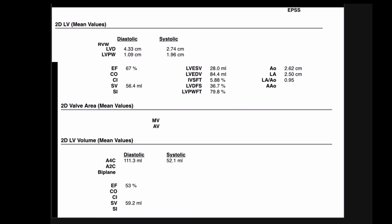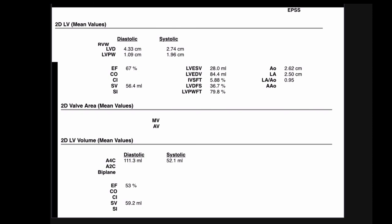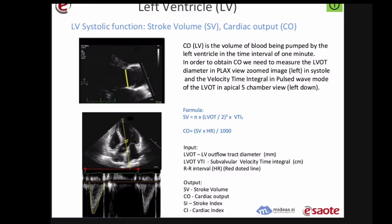Really, it's just a matter of knowing how to push the buttons and get the measurements done — once you've done that, the machine does all the calculations. So that's ejection fraction. Moving on to cardiac output: volume assessment and fluid responsiveness come in more here. Cardiac output is just stroke volume times heart rate.